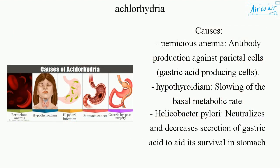Causes: pernicious anemia — antibody production against parietal cells, the gastric acid producing cells. Hypothyroidism — slowing of the basal metabolic rate. Helicobacter pylori —